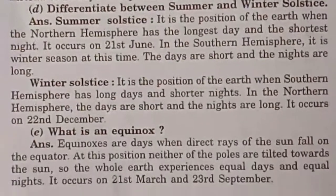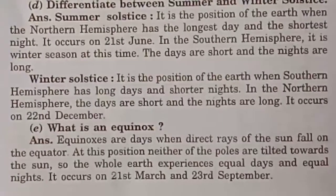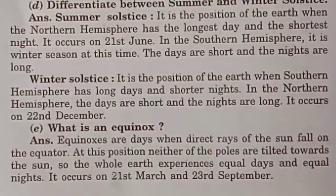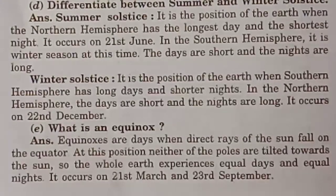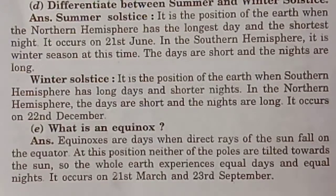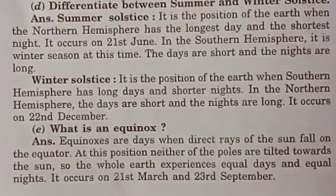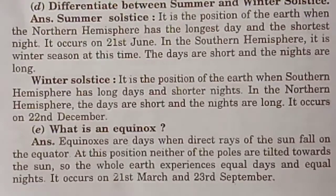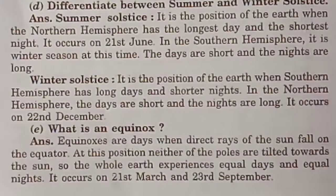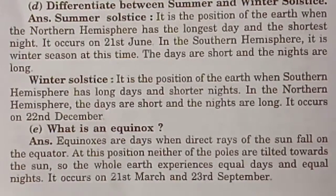What is an equinox? Equinoxes are days when direct rays of the sun fall on the equator. At this position, neither of the poles are tilted towards the sun, so the whole Earth experiences equal days and equal nights. It occurs on 21st March and 23rd September.